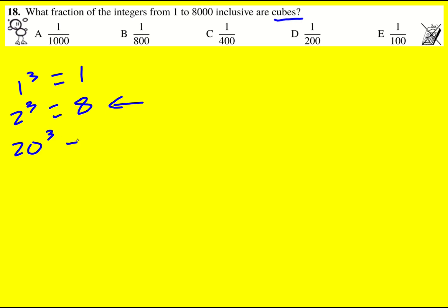20 cubed is 20 times 20 times 20, which is actually 2 times 2 times 2 times 10 times 10 times 10. I've done this a long way, but it's going to be 8 times 1,000. It's going to be 8,000.